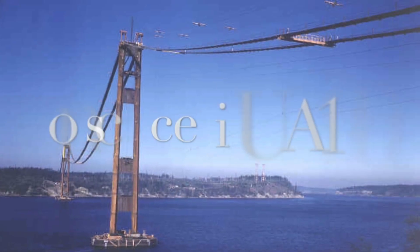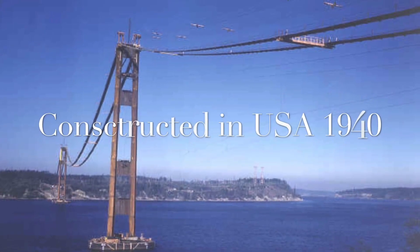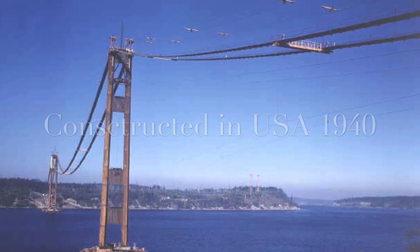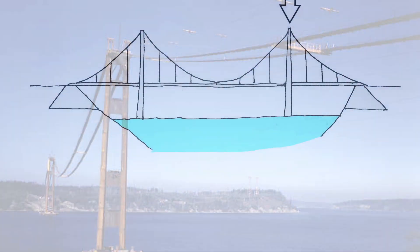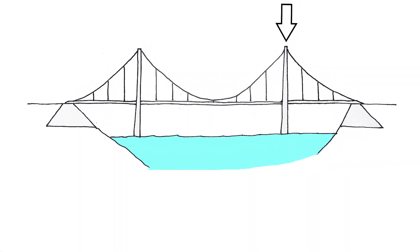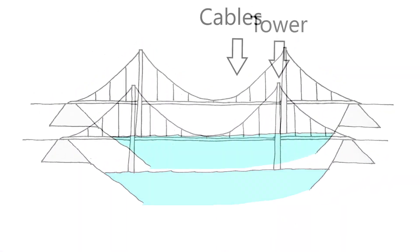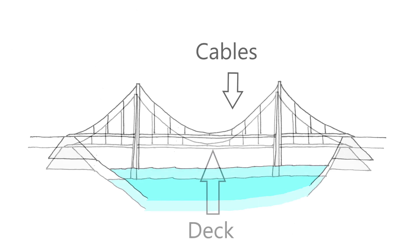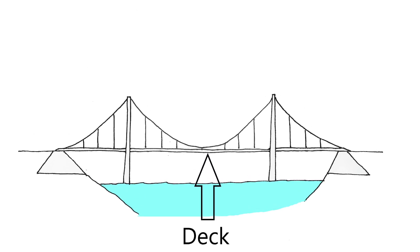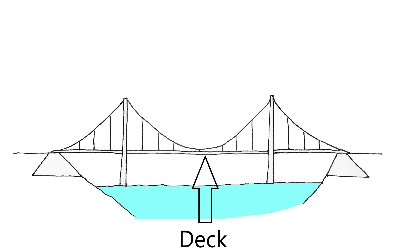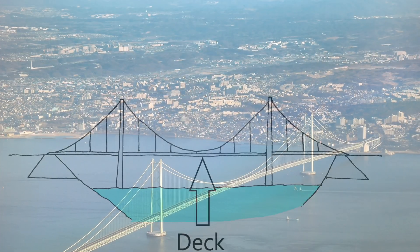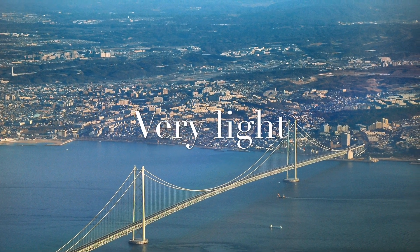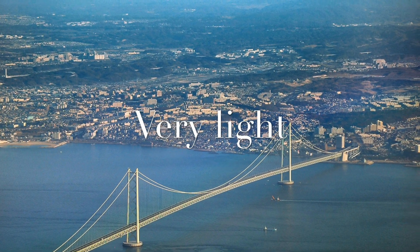When the Tacoma Narrows Bridge was constructed, it was still the early days of suspension bridges. A suspension bridge comprises of towers, cables, and the deck. The main advantage is that the suspension bridge is very light on materials and therefore more flexible than other types of bridges.